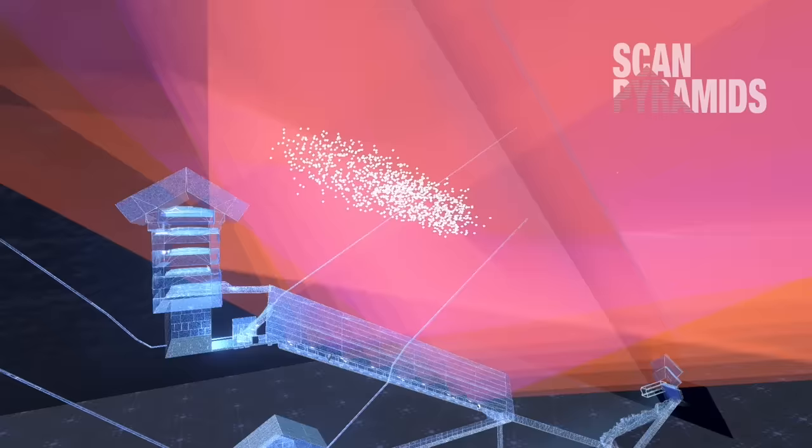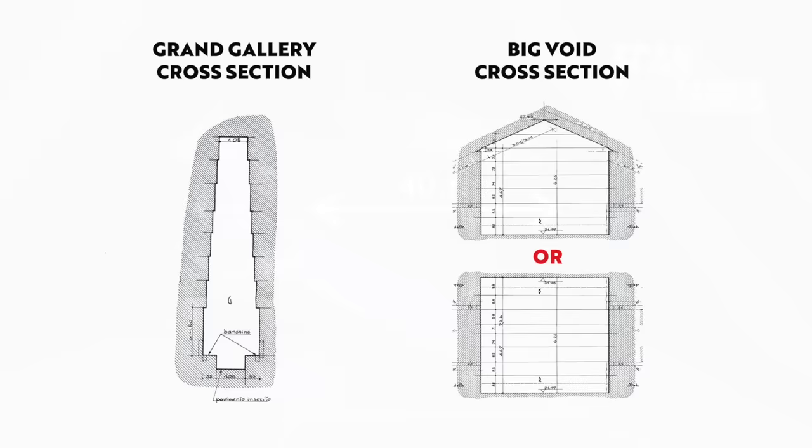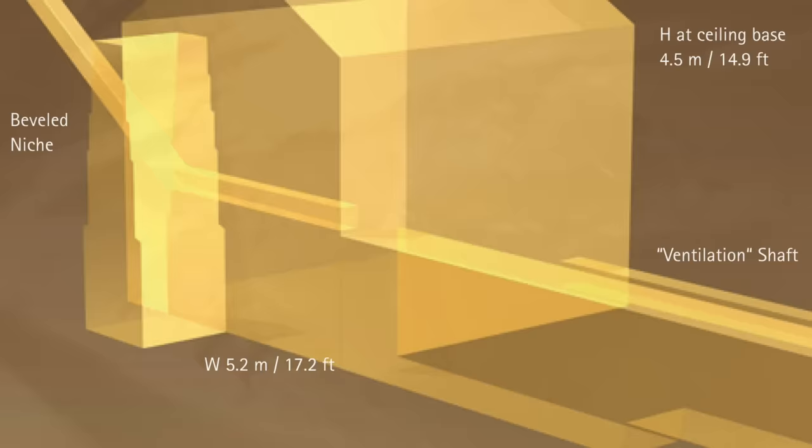The big void is a mystery, but it's there, 40 meters long, and according to Morishima, it looks to have a roughly 4 meter square profile. This means it doesn't have the tall, corbelled ceiling like the Grand Gallery, but it's more likely to have a gabled, saddle vault design like the Queen's Chamber, which is also a similar height, being just taller than 4 meters.